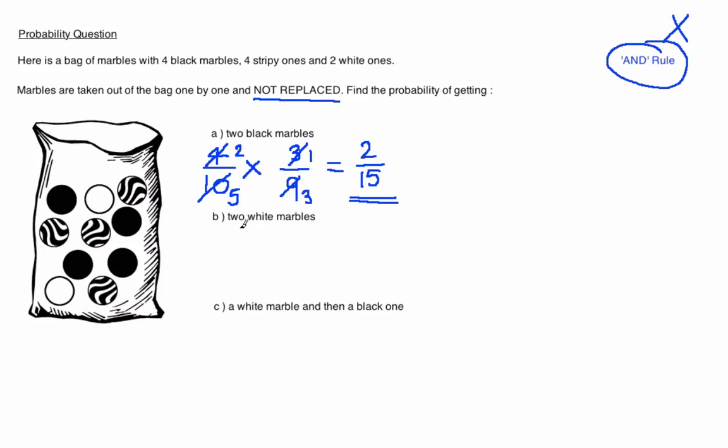In part B we want to know the probability of getting 2 white marbles. The probability of getting a white marble to start off with is 2 out of 10. Once one of the white marbles is gone we only have 1 white marble left and 9 altogether. So after getting a white marble out we now only have 1 out of 9 remaining.